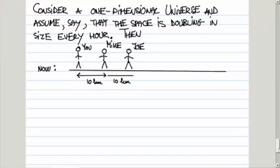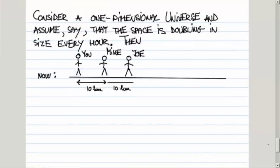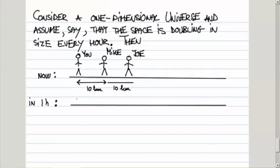So if the space doubles every hour, in one hour, the situation will be like this. You are where you are. You don't notice that anything is happening to you, you are sitting at the given spot. So you are where you are. So this is you. But now the distance between you and Mike has doubled. It has increased from 10 kilometers to 20 kilometers. So Mike is now here.